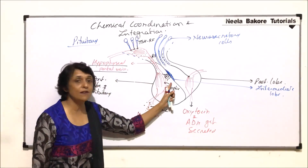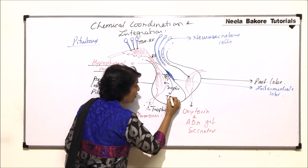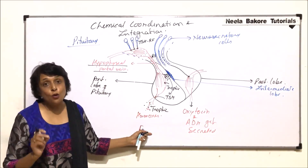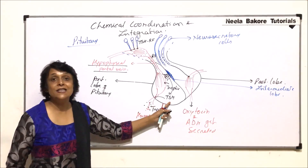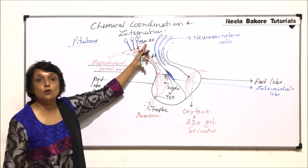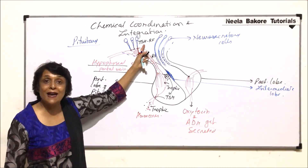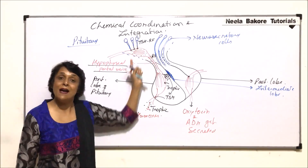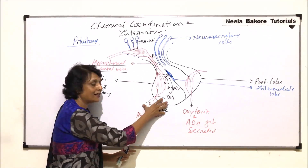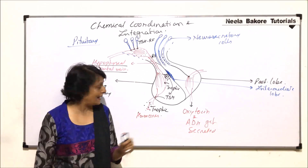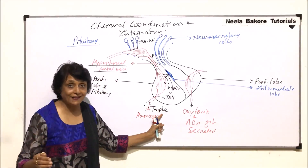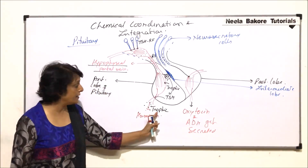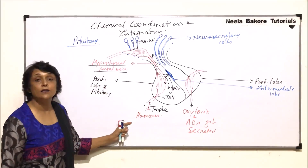This releasing factor stimulates the pituitary to secrete thyroid stimulating hormone (TSH), and TSH then stimulates the thyroid gland. So TSH is secreted from the anterior lobe in response to the releasing factor produced by the hypothalamus. Essentially, the pituitary executes the instructions coming from the hypothalamus, but it regulates other endocrine glands — and that is why the pituitary gland is known as the master gland. The hormones of the anterior lobe that stimulate other endocrine glands are known as trophic hormones.